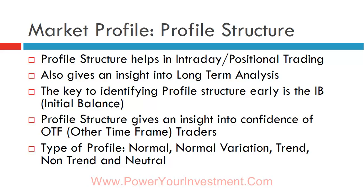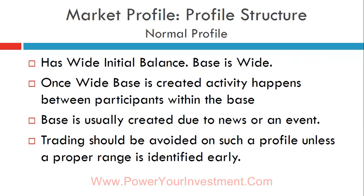The first kind is the normal profile, which has a very wide initial balance. A wide initial balance means it will be hard for the OTF trader to breach it — think of it like a physical balance scale where more weight on one side requires greater counterweight to shift. If the initial balance is very narrow, it's much easier for the OTF trader to knock it off in either direction. A normal profile is typically range-bound, so trading opportunity is very low and it's better to stay out.